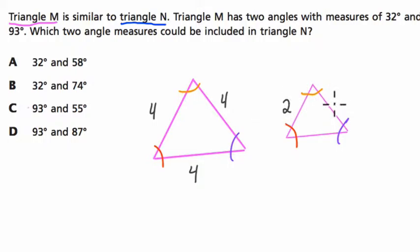It also means that each side is proportional to its corresponding side. What does that mean? Well, let's say this side is 4, and this side is 4, and this side is 4. And let's say I then took each side length and multiplied it by 1 half. So, each side here is now 2, and 2, and 2.